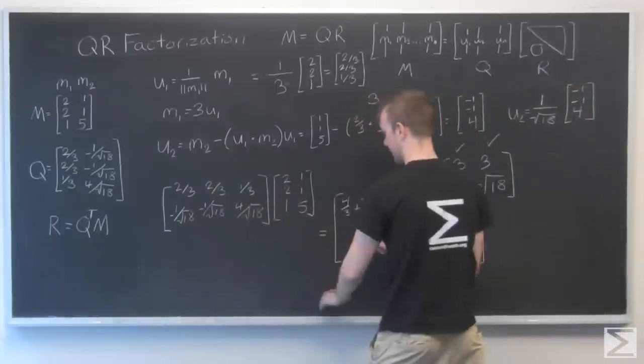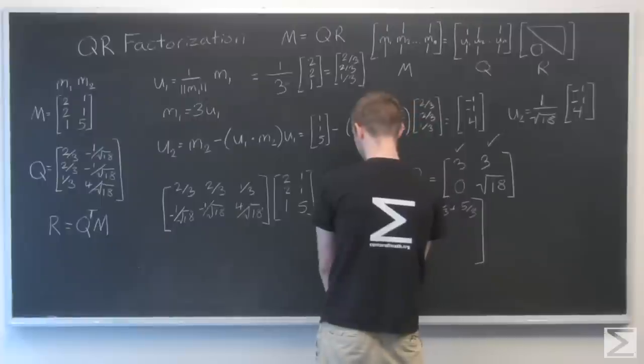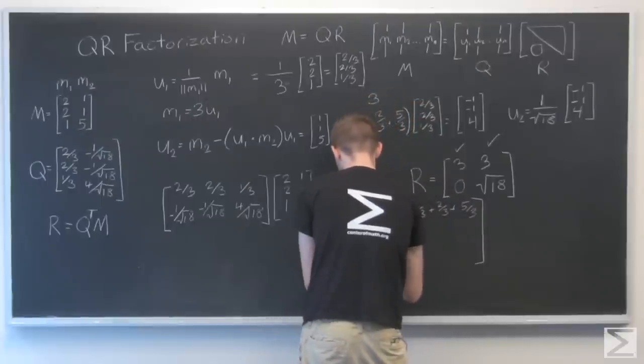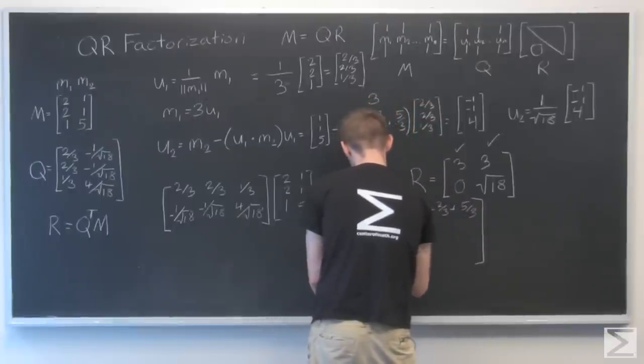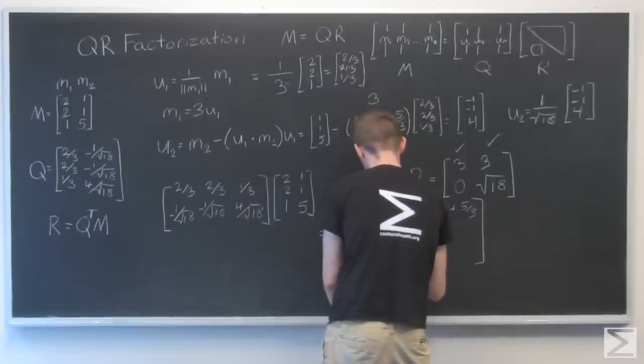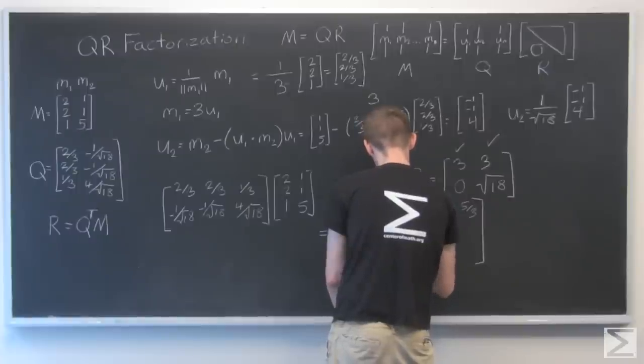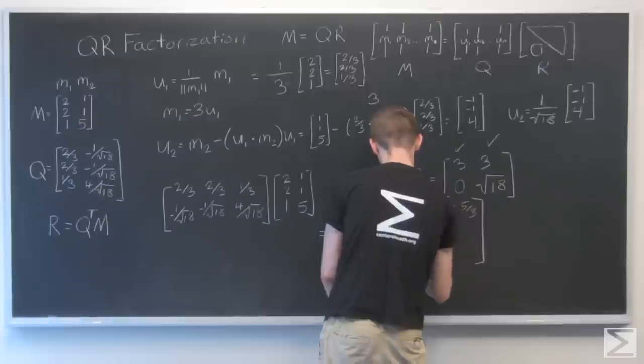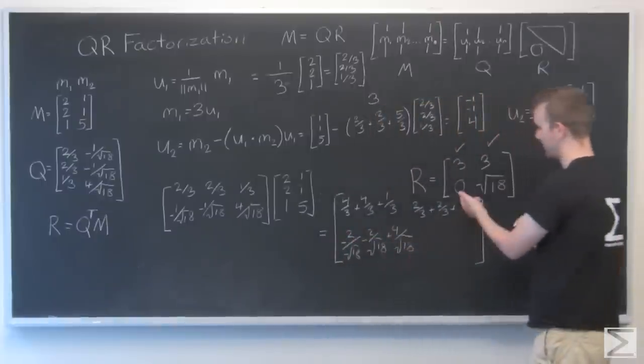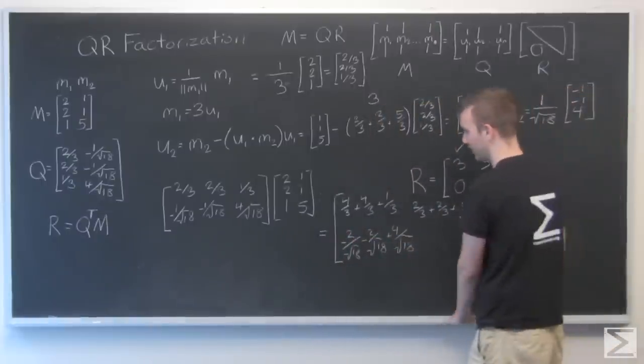This row times that. That's -2 over square root of 18, -2 over square root of 18, plus 4 over square root of 18. Hey, look, that equals 0. So that's right.